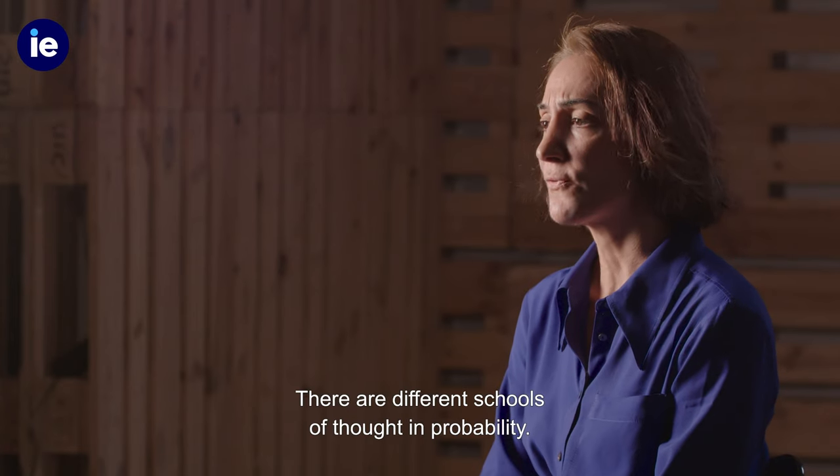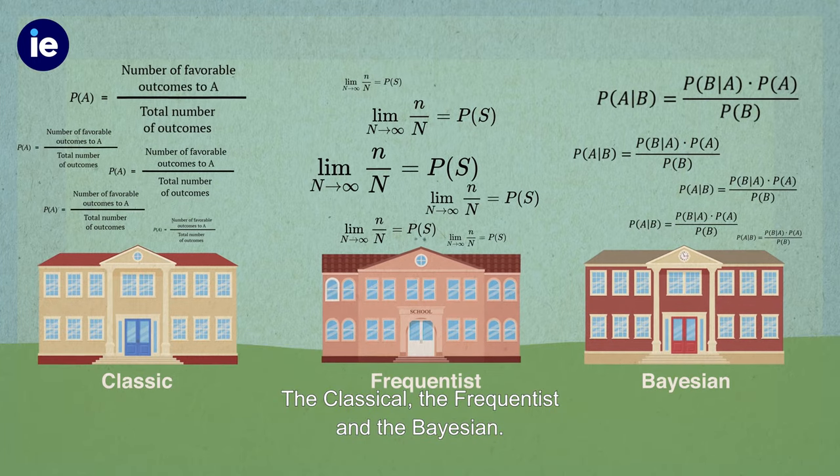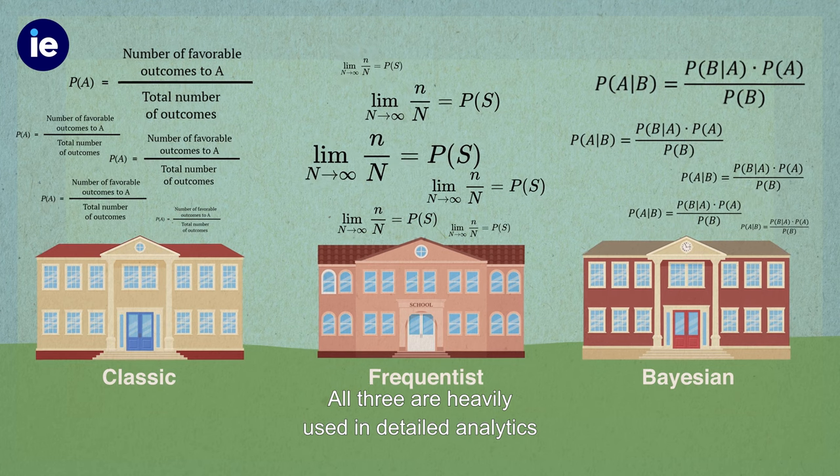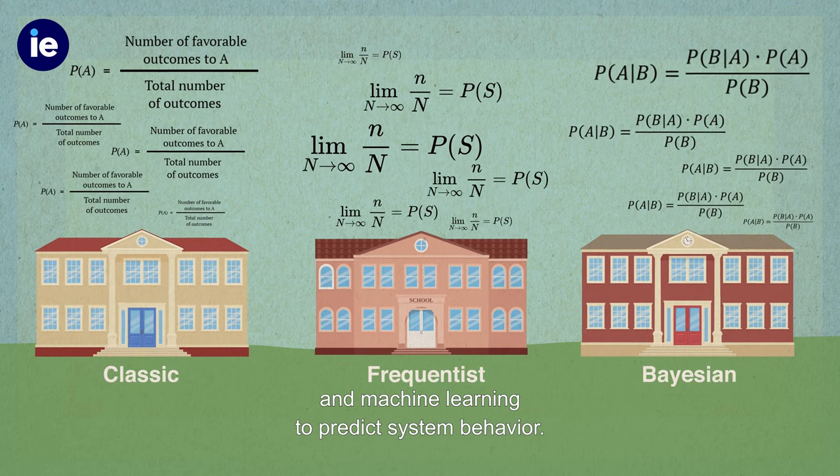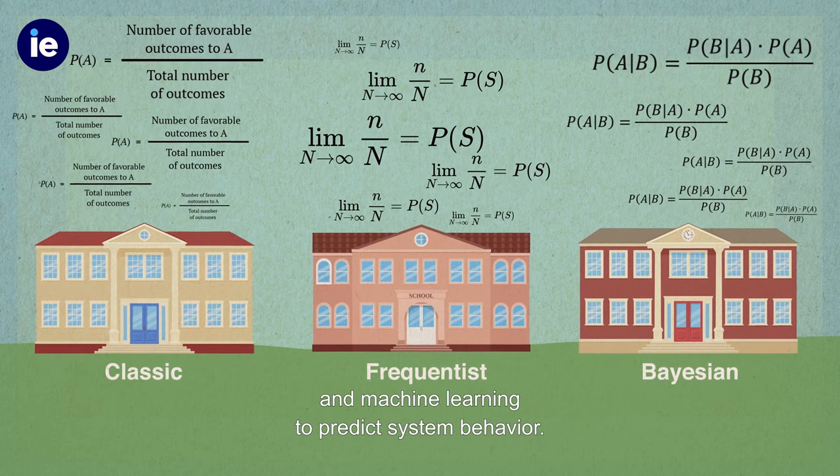There are different schools of thought in probability: the classical, the frequentist, and the Bayesian. All three are heavily used in data analytics and machine learning to predict system behavior.